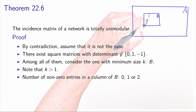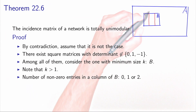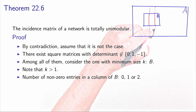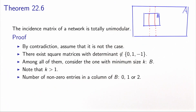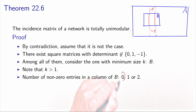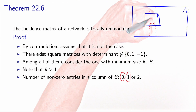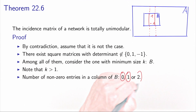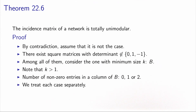Let's look more specifically at a column of matrix B. How many non-zero entries can this column contain? We know that matrix A has columns with exactly two non-zero entries, 1 and minus 1. So either both are outside B (zero non-zero entries), or one is inside and one outside (one non-zero entry), or both are inside B (two non-zero entries). It cannot contain more. So it's 0, 1, or 2. We will investigate each of these possibilities one at a time.